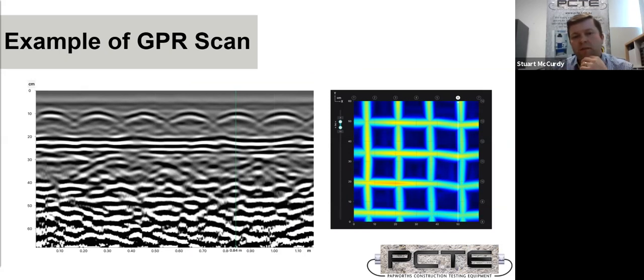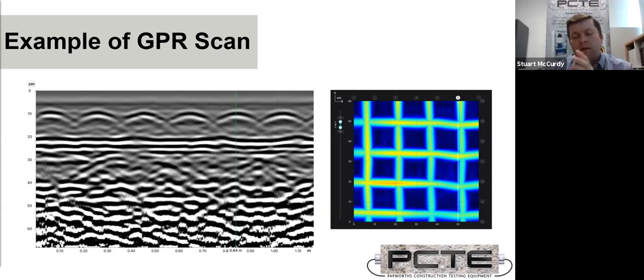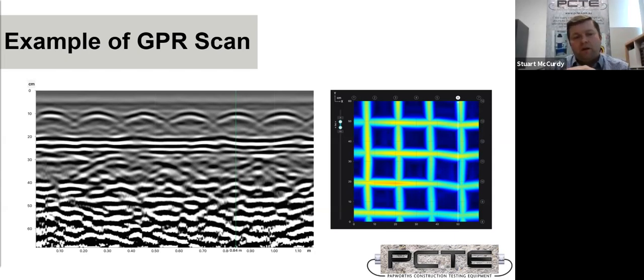Here's an example scan. We have a top layer of reinforcement with probably equal spacing around 150 millimeters for each of those curves, and then we have a straight line around 200 millimeters, which is the bottom of the slab.